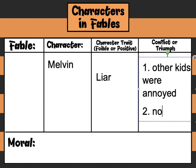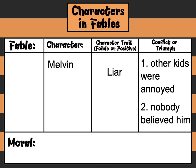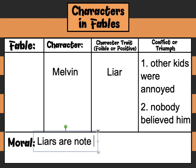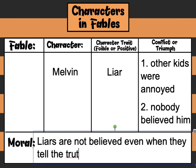We know that because Melvin was doing things that were wrong, he has a foible — a foible is a negative character trait. One of Melvin's main negative character traits in this fable is that he was being a liar; he was not telling the truth about the lunch monitor coming back into the room. This led to a conflict: the other kids were not happy with Melvin and didn't like that he was being annoying, and nobody believed him because he had been a liar. When somebody lies over and over again, it's very hard to trust them. The moral of this story is that liars are not believed even when they tell the truth — which means we should always tell the truth so that when it counts, people will be able to trust us.